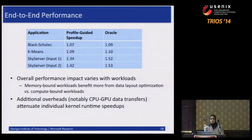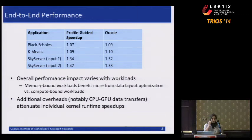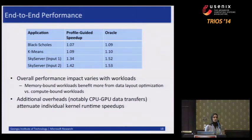The overall performance impact varies with workloads. Since we did a memory optimization, memory-bound workloads benefit more, whereas Black Shields and K-Means are compute-bound workloads that don't do that many memory operations. The main interesting point is that SkyServer — with two different inputs where the optimization helps in one case and doesn't in the other — gets a pretty good benefit of 34% to 42% from our framework, with the programmer doing essentially nothing.